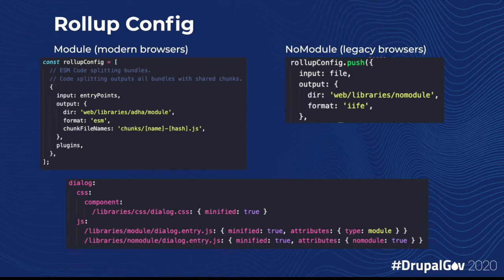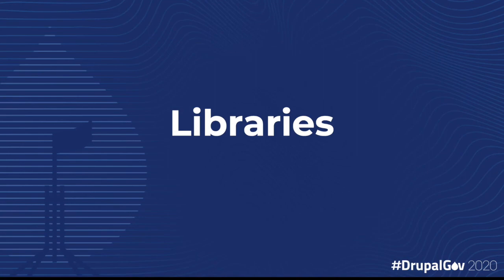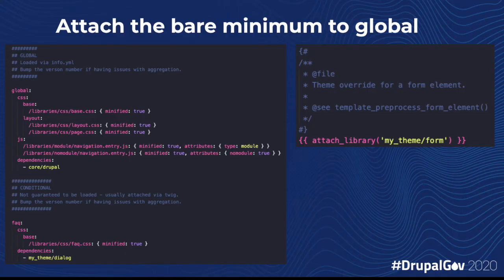We then add both output bundles to our libraries, adding the type equals module attribute to the code-split bundles for modern browsers, and nomodule equals true to bundles that we want to deliver to legacy browsers like Internet Explorer. Finally, it's best practice to make sure you're only attaching assets that are used on the page. There's no point loading a page's CSS and JavaScript with slider or dialog code that's not used. Try to attach the bare minimum styles to the theme's global library and declare the others without adding them straight away. These can then be attached in the Twig templates that require them.